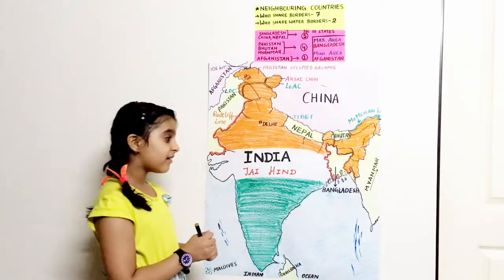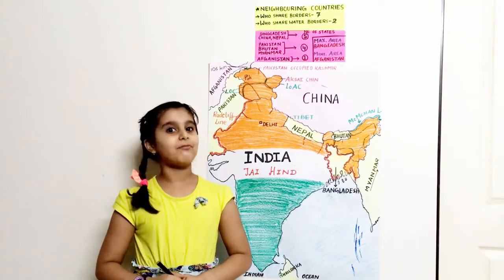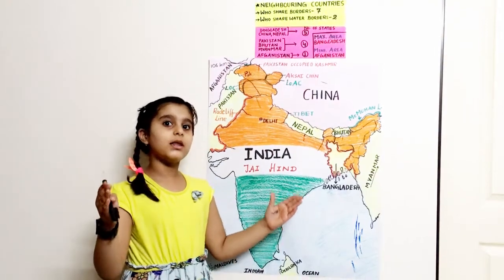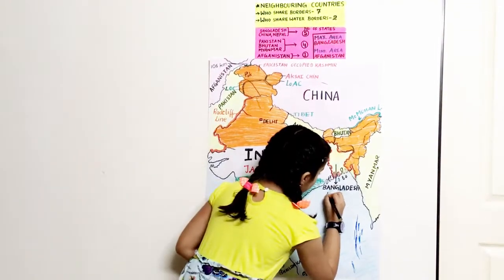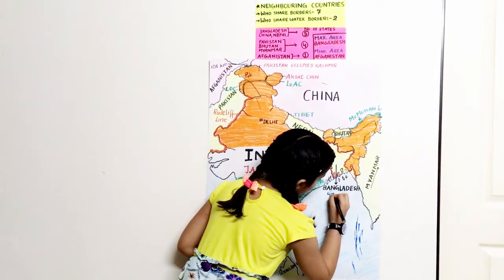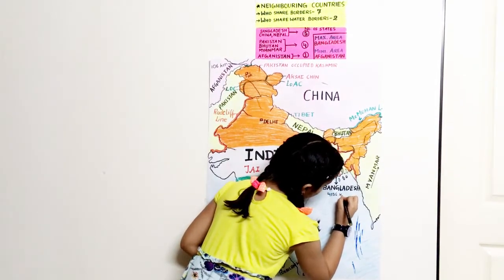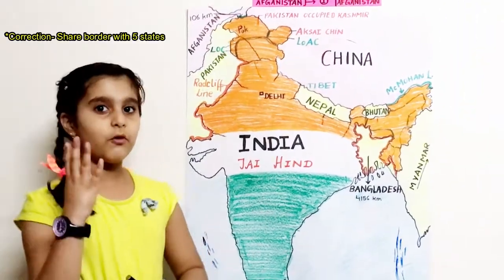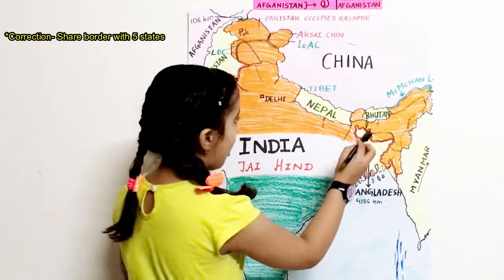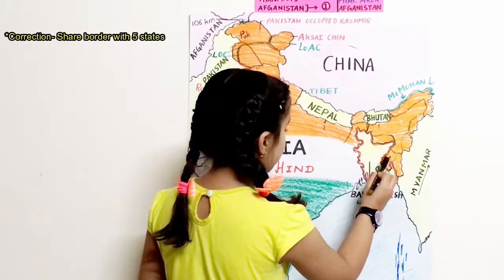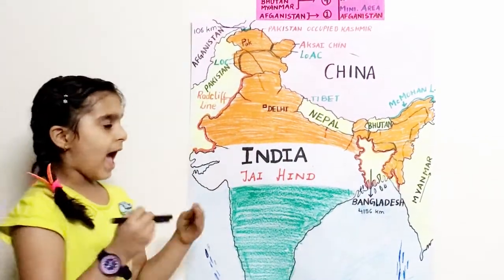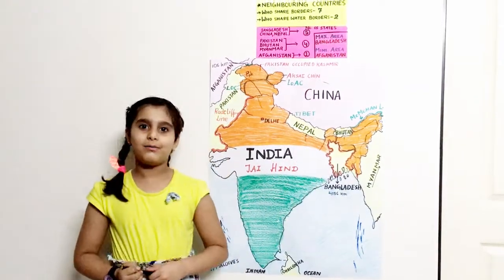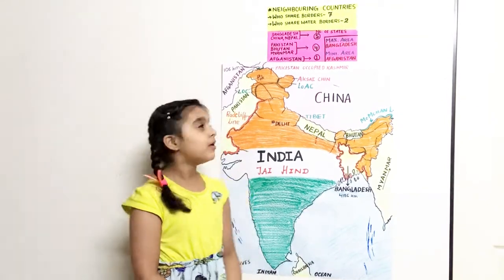Our next neighboring country is Bangladesh. The capital of Bangladesh is Dhaka. It shares the longest border with India, which is 4,156 kilometers. It shares borders with four states which are West Bengal, Assam, Meghalaya, Tripura and Mizoram. It is clear that it shares the largest border with West Bengal.